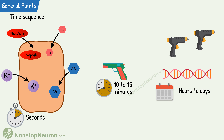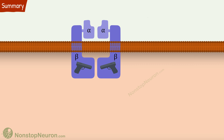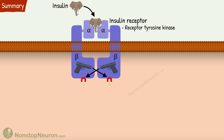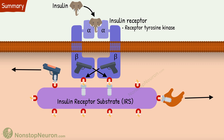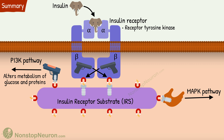So this was all about the mechanism of action of insulin. Let's have a quick summary. Insulin receptors are receptor tyrosine kinases. Upon activation, first there will be cross phosphorylation of tyrosine residues, then IRS protein is recruited and phosphorylated. There are two main pathways downstream: the PI3K pathway that leads to changes in metabolism of glucose and proteins, and the MAPK pathway that increases gene expression and growth.